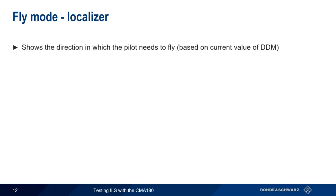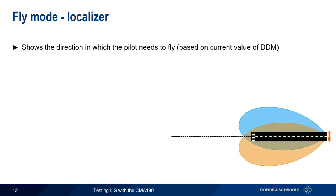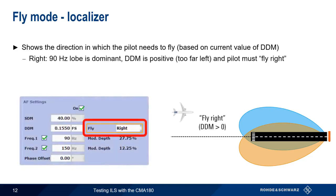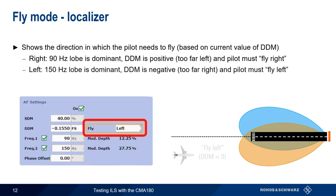DDM is closely related to something called fly mode. Fly mode is simply an indication of which direction the pilot needs to fly in order to intercept the localizer centerline, based on the current value of DDM. If fly mode shows right, this means the 90 Hz lobe is dominant, DDM is positive, and the pilot must fly right to intercept the centerline. If fly mode shows left, then the 150 Hz lobe is dominant, DDM is negative, and the pilot has to fly left to center the aircraft with the runway.